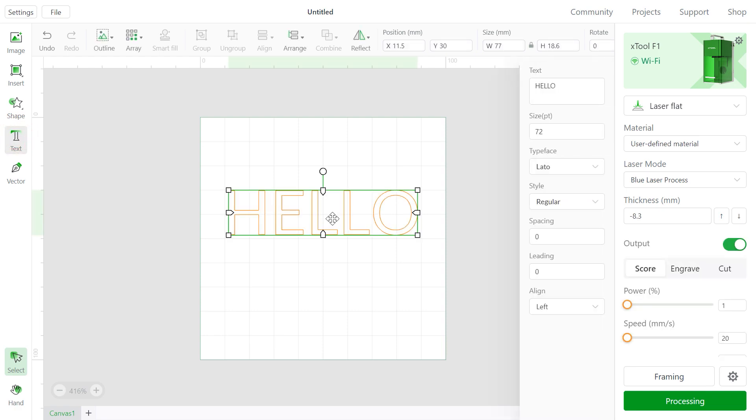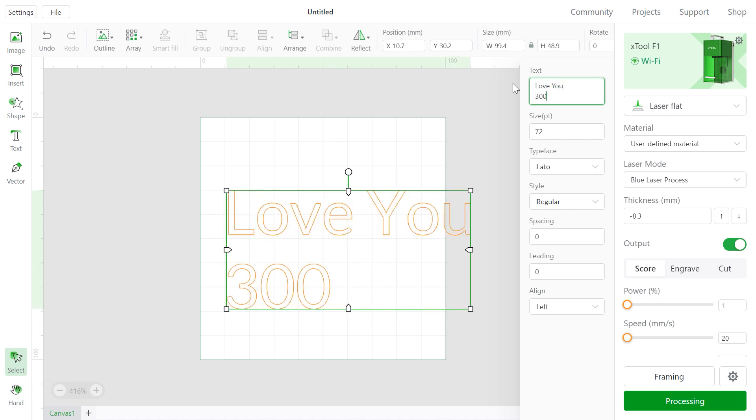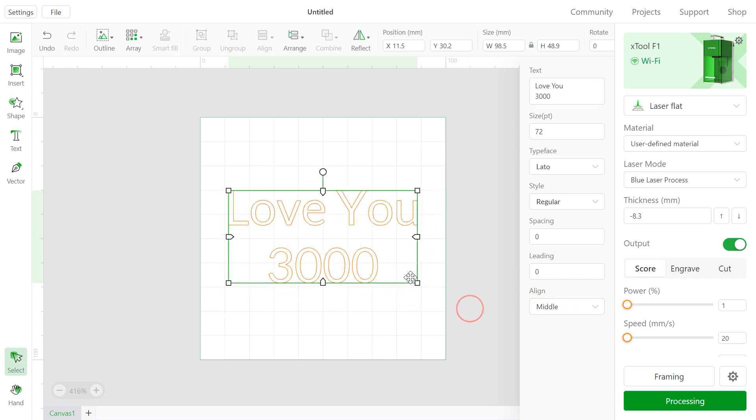First, let's insert a text right here. I'm going to write Love U 3000. And let's center this 3000 right here. Choose Align, choose Middle, and there we have it. Now let's adjust this to the right size and the right position.